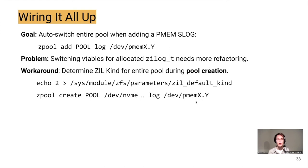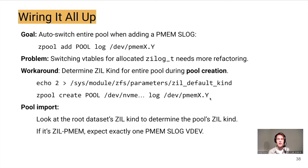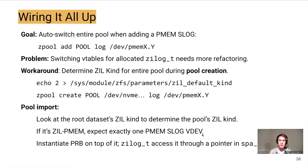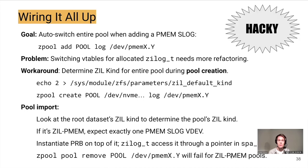When we set the module parameter to zilpmem and create the pool, we check that the VDEV config contains exactly one PMEM slog device, and then set the root dataset's ZIL kind to zilpmem. Whenever we import the pool, we look at this root dataset ZIL kind, verify the VDEV config still matches, and instantiate PRB on top of the PMEM slog space. The individual ZIL instances then access the PRB via a pointer. We also prevent operations like zpool remove of the slog device, to avoid pulling out the PMEM from underneath PRB while it's in use.